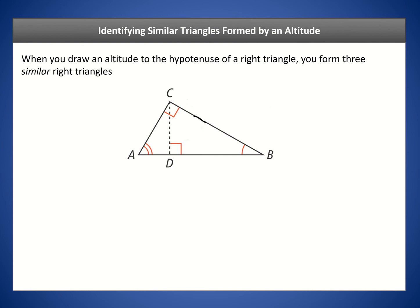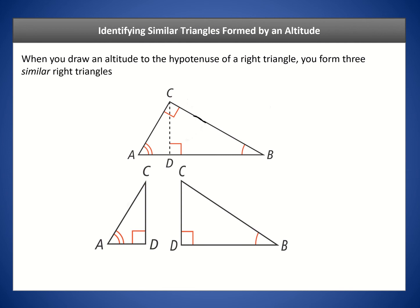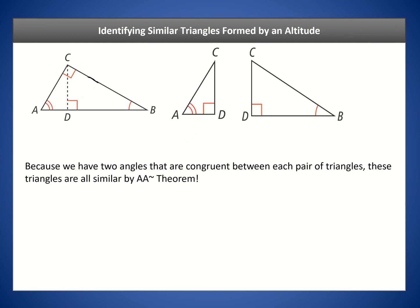We drew an altitude to the hypotenuse and you can see that three right triangles are formed: the one on the left, the one on the right, and the original large right triangle before it was divided. It turns out these three triangles are similar, and because we have two angles that are congruent between each pair of angles, we can claim they're all similar by the angle-angle similarity theorem.